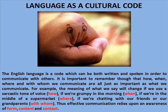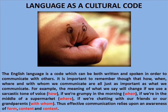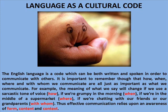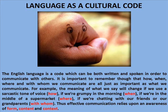Language is a cultural code. The English language is a code which can be both written and spoken in order to communicate with others. It is important to remember though that how, when, where and with whom we communicate are all just as important as what we communicate. For example, the meaning of what we say will change if we use a sarcastic tone of voice — how; if we are grumpy in the morning — when; if we are in the middle of the supermarket — where; if we are chatting with our friends or our grandparents — with whom. Thus, effective communication relies upon an awareness of form, content and context.